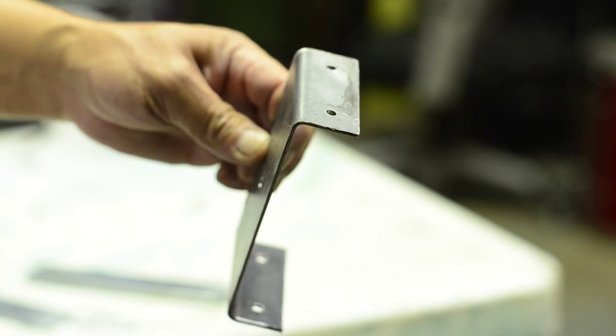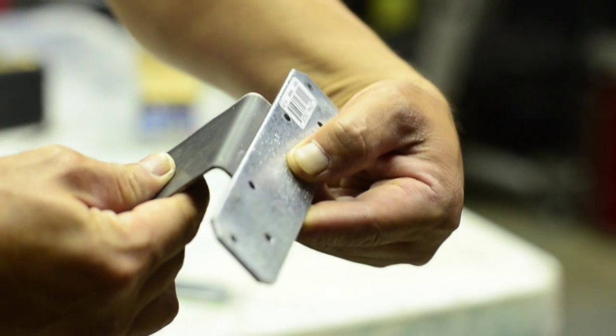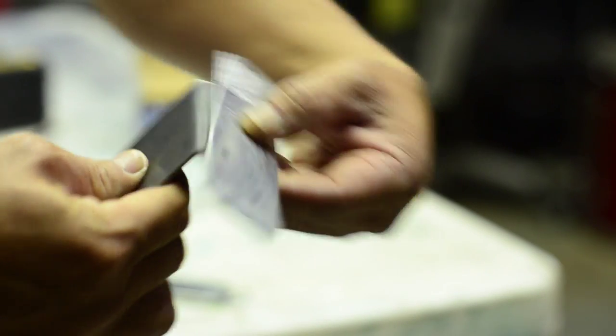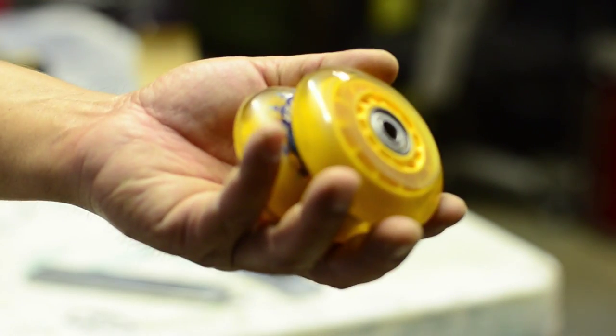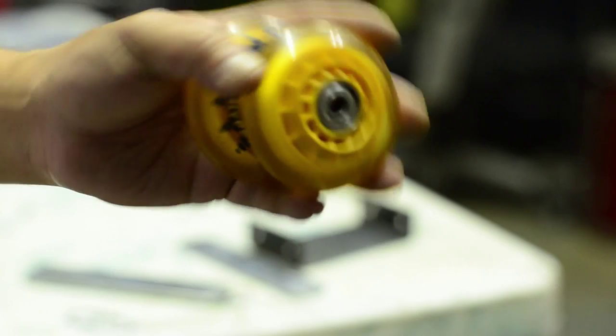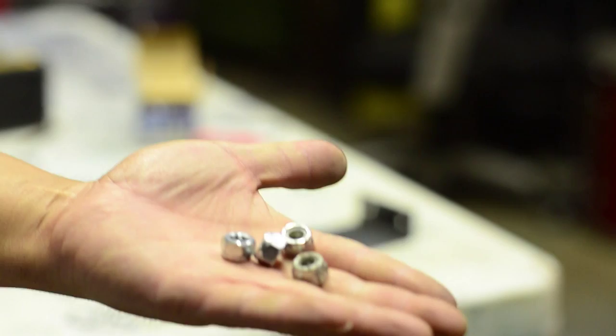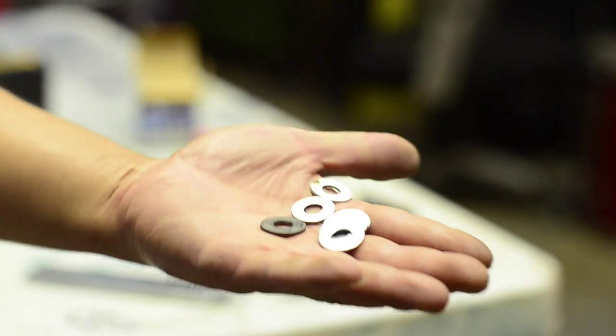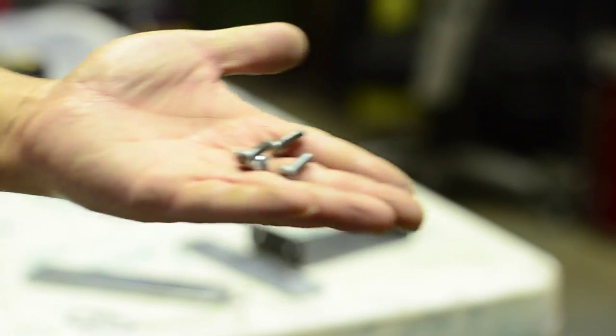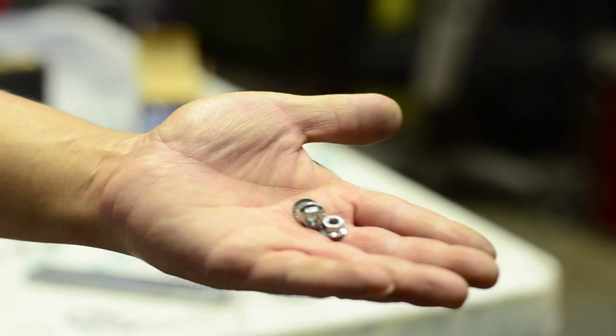These are all the parts you're going to need: rollerblade wheels (you need eight of those), 5/16 bolts (you need four of those), 5/16 lock nuts and washers, small bolts and matching nuts.